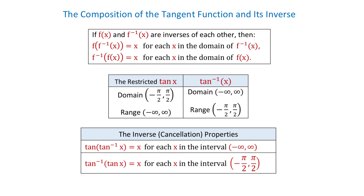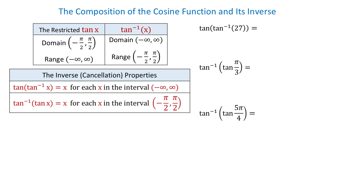Now let's see how we can apply these properties to simplify expressions. Here we have three examples. The first one is tangent of inverse tangent of 27. This expression starts with tangent and has inverse tangent inside the parenthesis, so we will apply the first property. We check that 27 is on the interval from negative infinity to positive infinity — yes, it is — and according to this property, whatever number we have here, the same will be the result. So tangent of inverse tangent of 27 is 27.